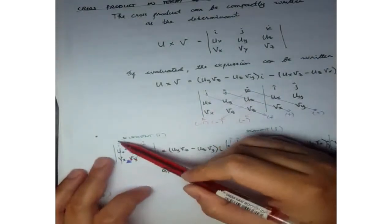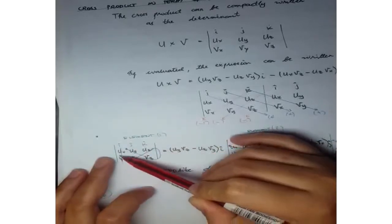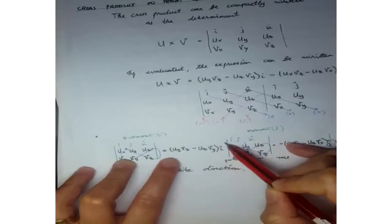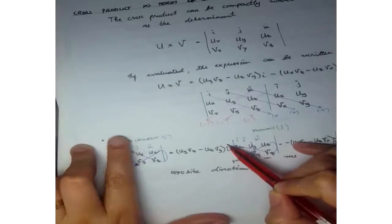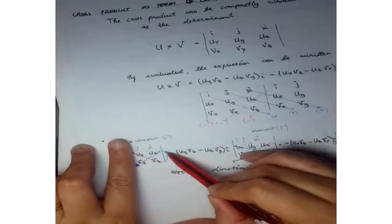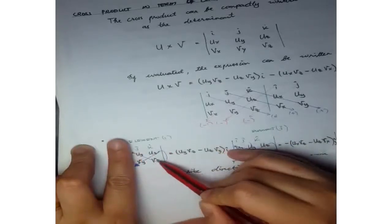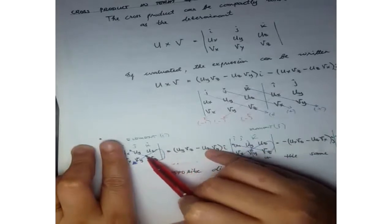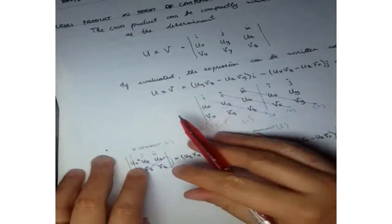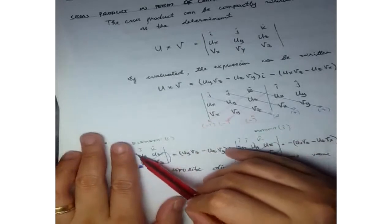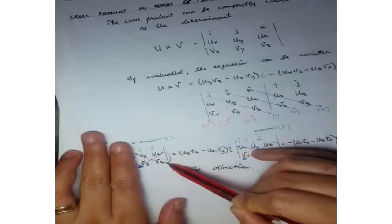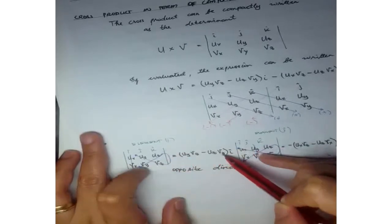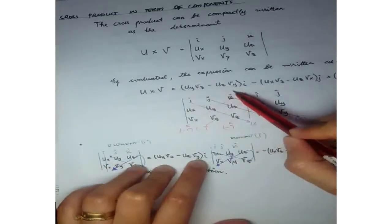The technique is to write the I, J, K components, and the X, Y, Z components of vectors U and V. To find element I, cover the I column and follow the stroke pattern. Multiply Uy times Vz, minus Uz times Vy. So the I element is Uy·Vz minus Uz·Vy.